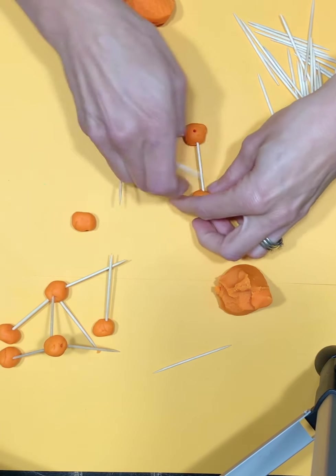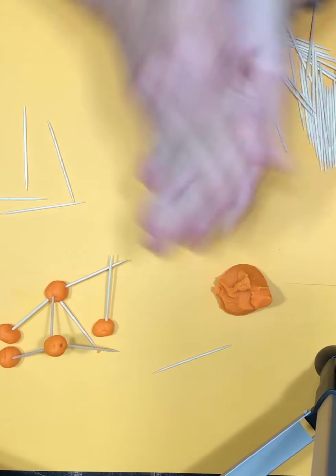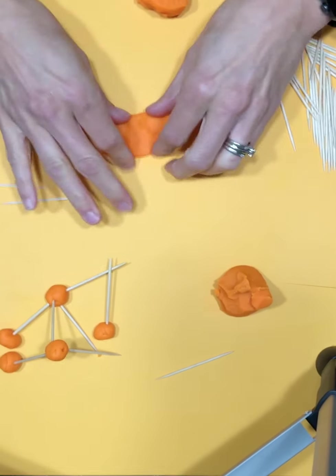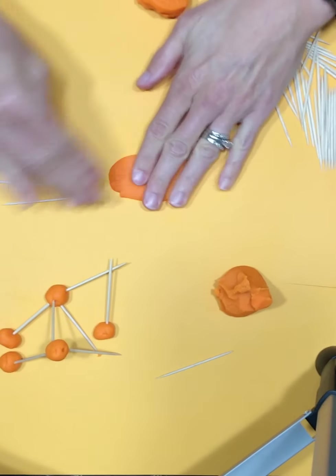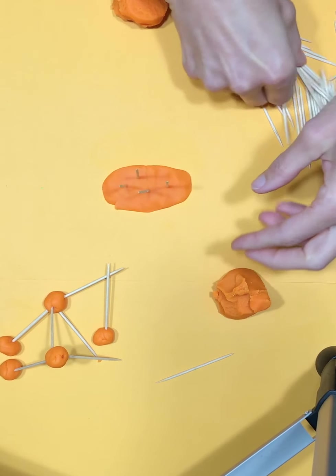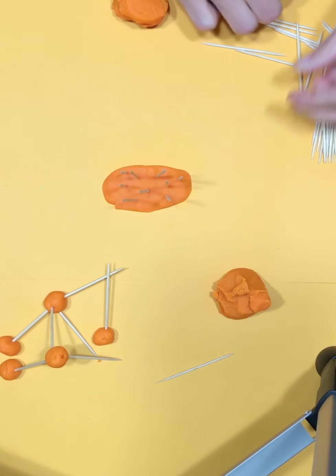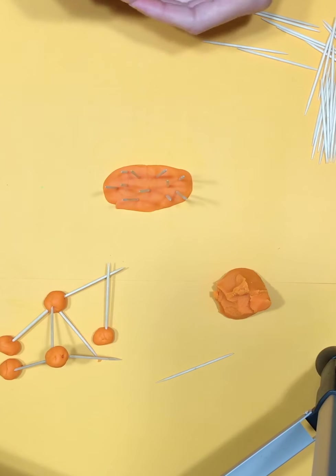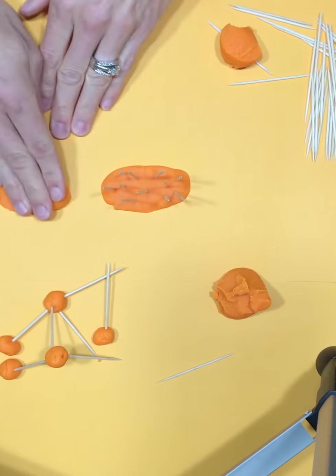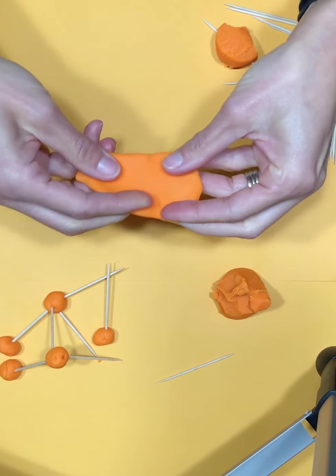Another way you can do this is maybe you want to take some play-doh, and I'm just gonna roll this out. I don't want to roll it too thin because I need something for my toothpicks to hold up, and this will hold some toothpicks. I'm just gonna kind of jab them in there. That's working pretty good actually. I'm just gonna take another piece and do this and maybe lay that on top.